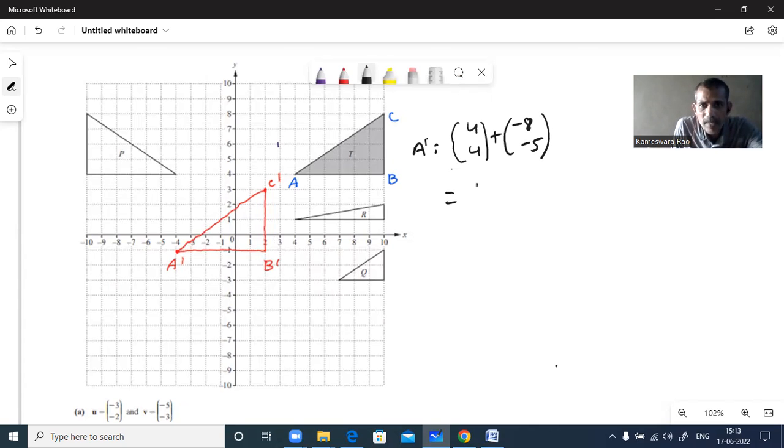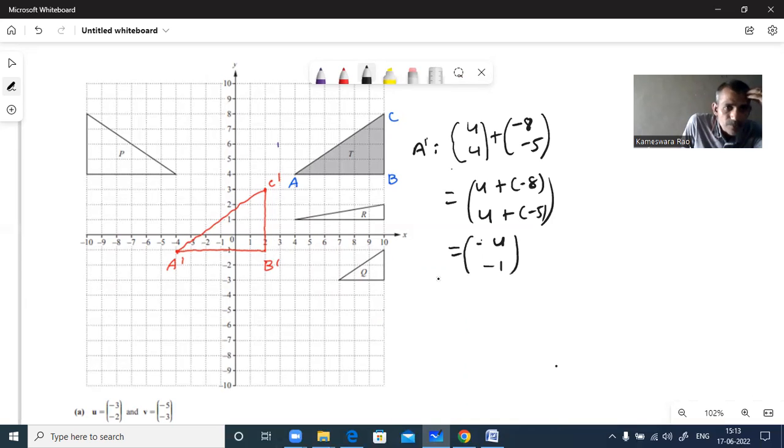4 plus minus 8 and 4 plus minus 5. Okay so what you are going to get A dash? 8 minus 4 that is minus 4, minus 5 plus 4 means minus 1. So A dash is minus 4 minus 1. This is your A dash.